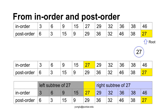Please notice that we are not using the property of binary search tree here. What we have done so far uses the last node in the post-order to find the root of the tree. Then, we locate this node in the in-order traversal. From this location, we can divide the in-order traversal into the left subtree and the right subtree of the root.